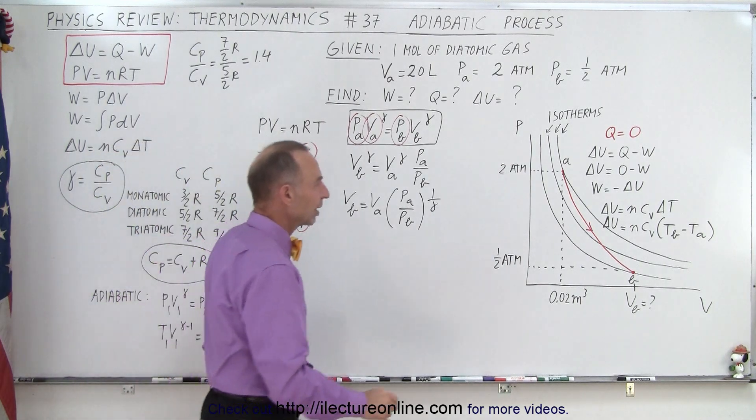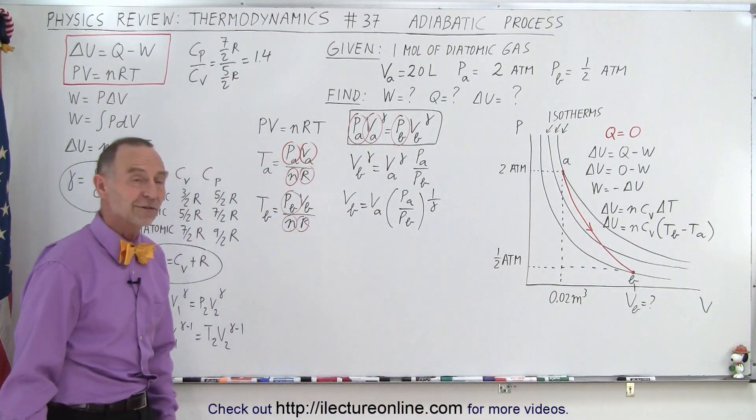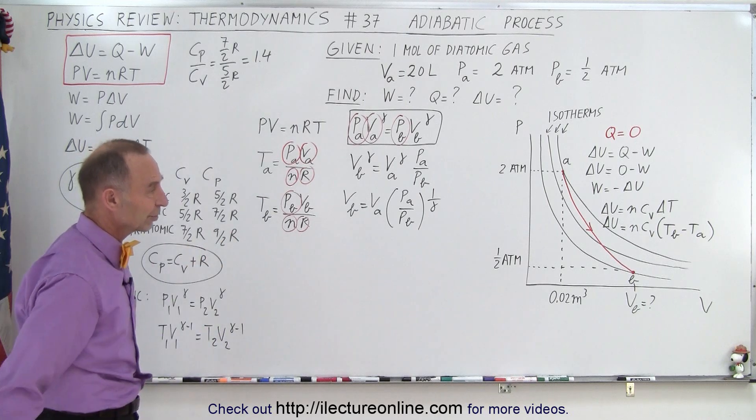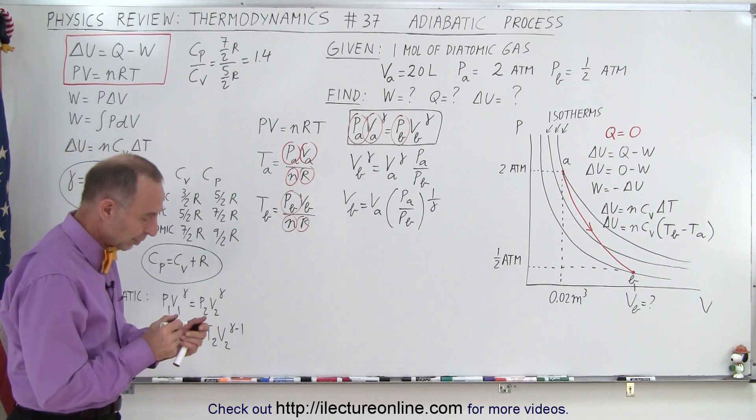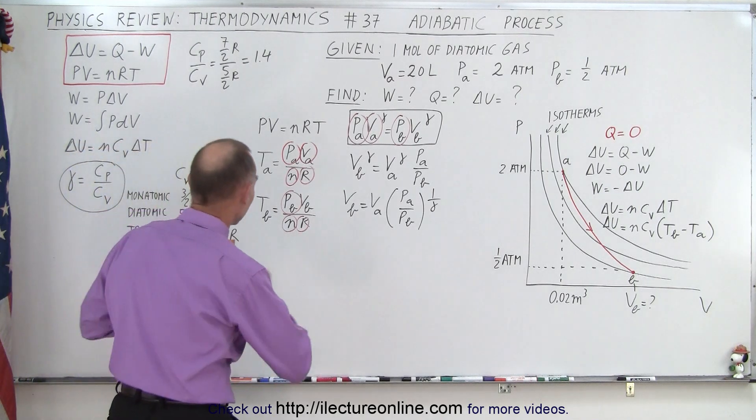Then we have both temperatures, and we can then solve for delta U. And that's how you solve an adiabatic process. Now the rest is just algebra, we'll throw in the numbers and we'll calculate the results, but essentially at this point, the physics problem is done. So quickly, let's go ahead and plug in some numbers.